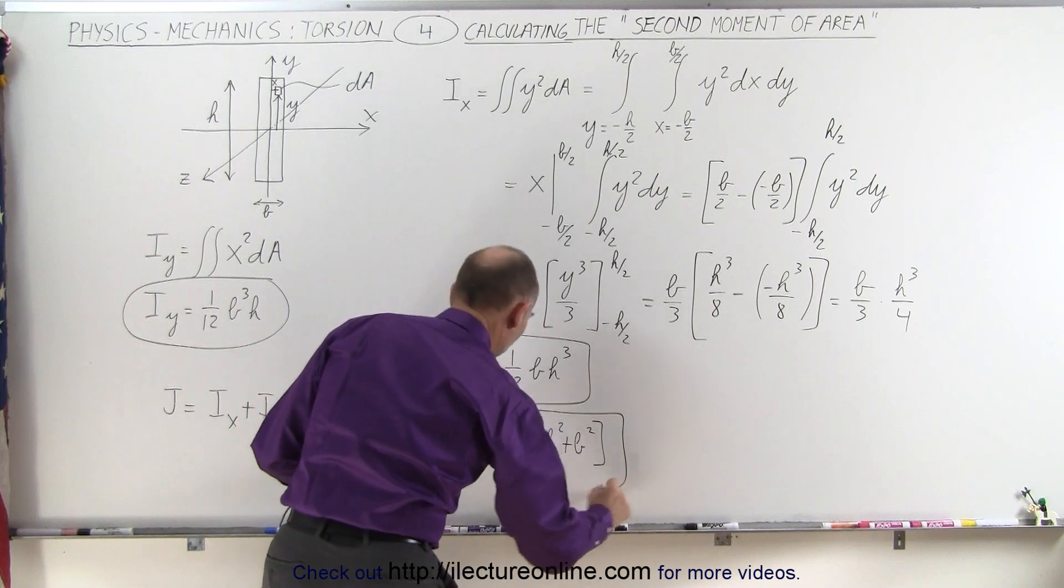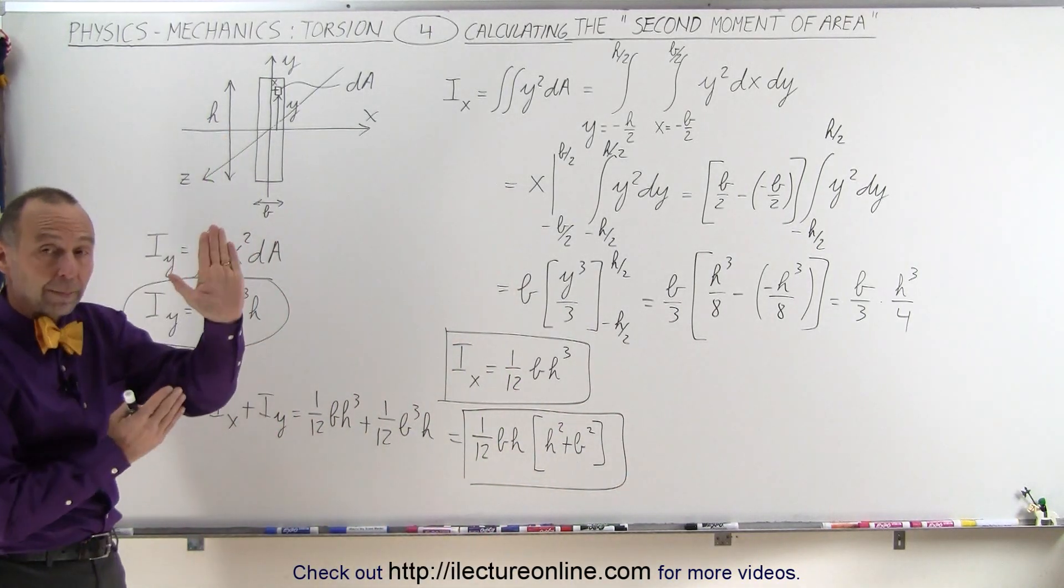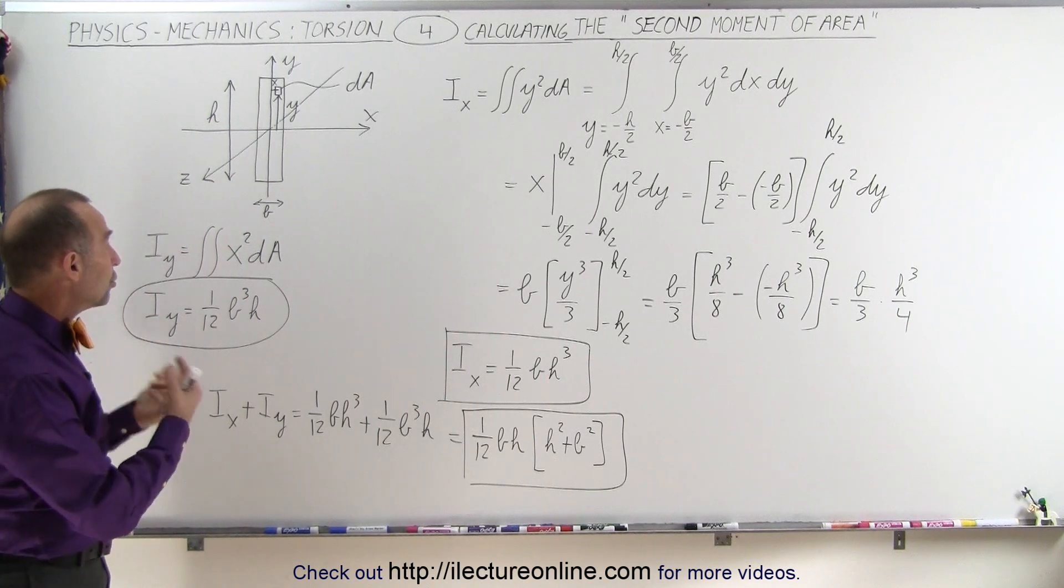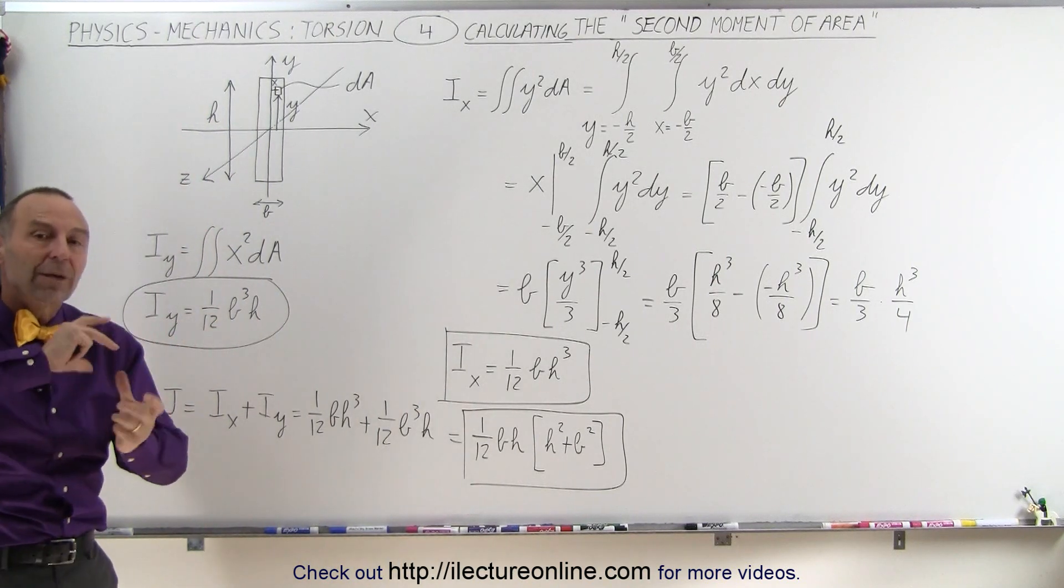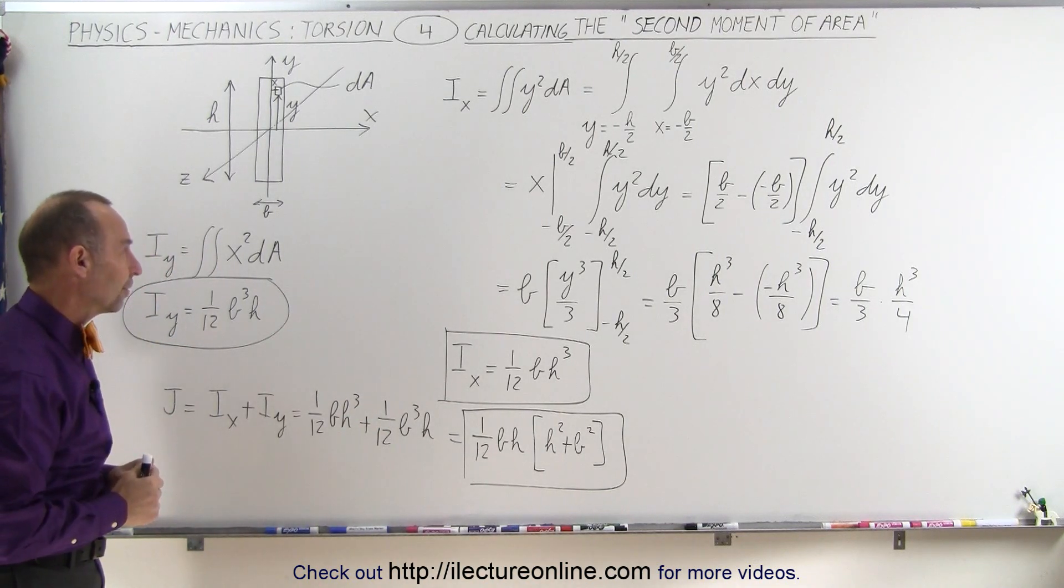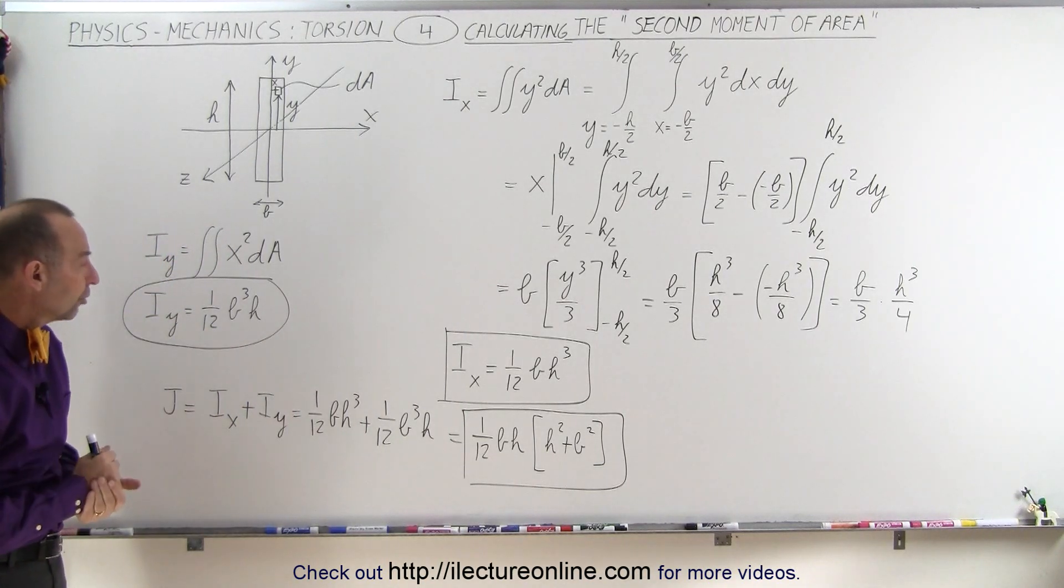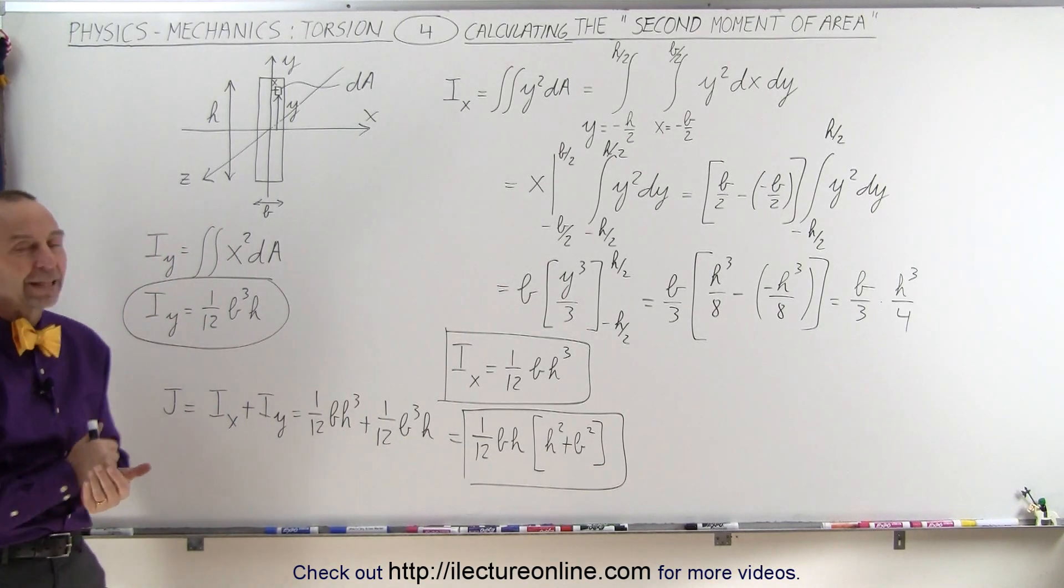And so this would be the torsional constant we would use for a beam put up on its side. And if we want to use it to try and figure out what it would take to twist that beam, of course, then we would use this value right here for the torsional constant. And that's where it came from. It comes out of the calculation of what we call the second moment of area, and that's how it's done.